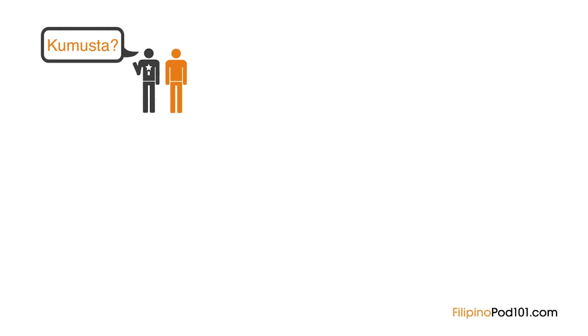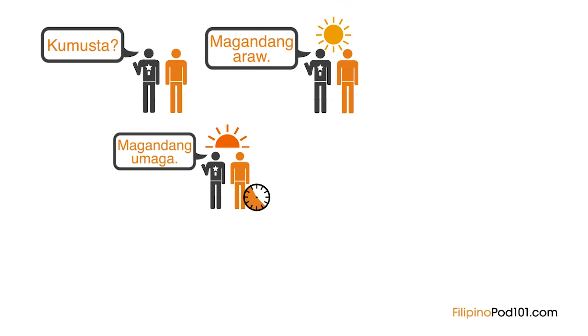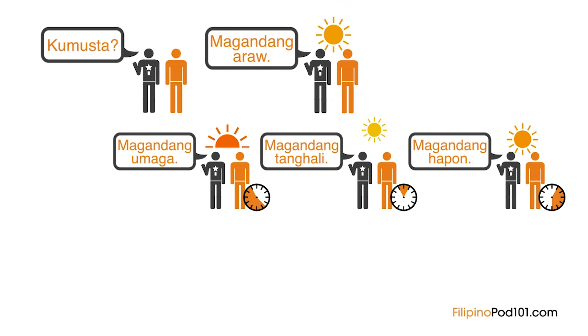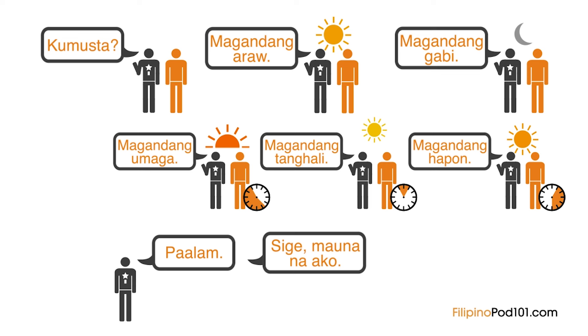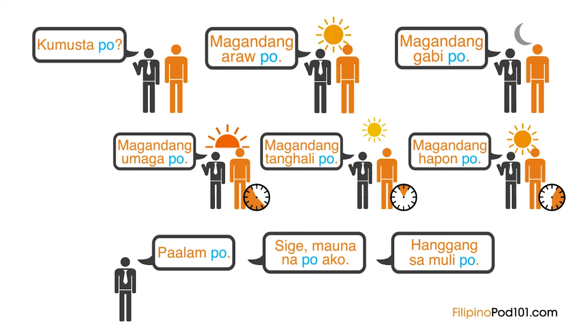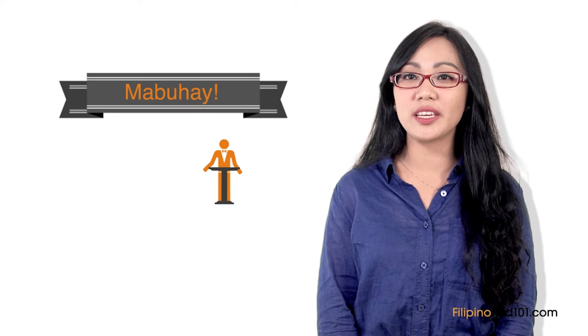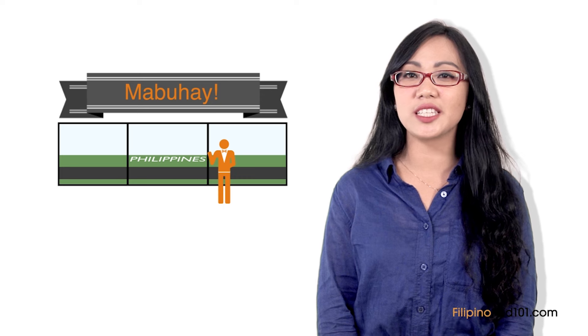Now you can greet people in many different ways in Filipino. The greetings when meeting people are: 'Kamusta?', 'Magandang araw,' 'Magandang umaga,' 'Magandang tanghali,' 'Magandang hapon,' 'Magandang gabi.' When leaving: 'Paalam,' 'Sige mauna na ako,' 'Hanggang sa muli.' For greeting people who are older than you, just add 'po.' Erica's tip: another famous greeting you might hear in the Philippines is 'mabuhay,' which literally means 'live' but is used to mean 'welcome' — in formal situations like welcoming an audience during events or welcoming people into the country.